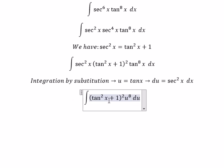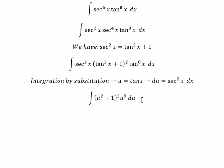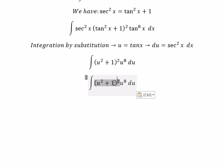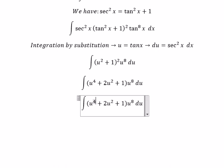This gives us (u^2 + 1)^2 * u^8 du. Expanding, we have u^4 + 2u^2 + 1. Now we multiply by u^8 to get u^12 + 2u^10 + u^8.